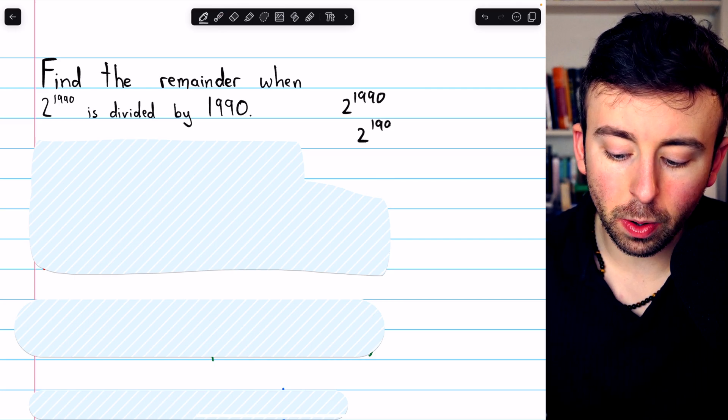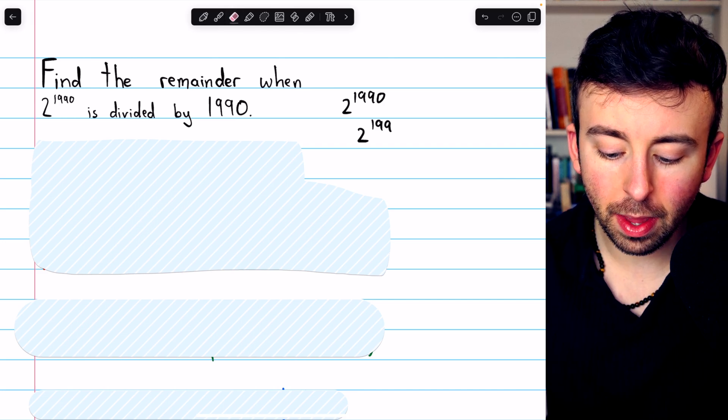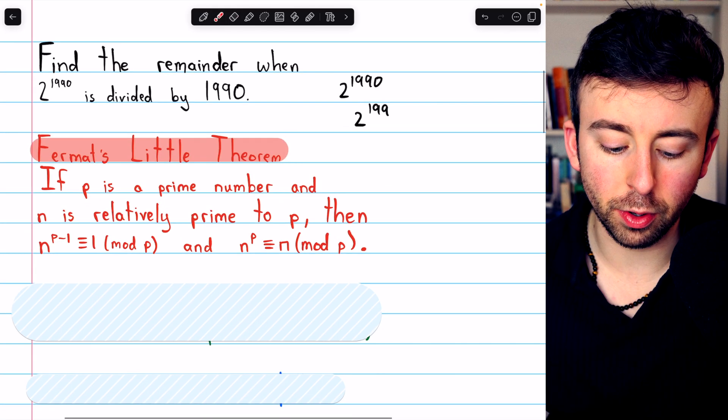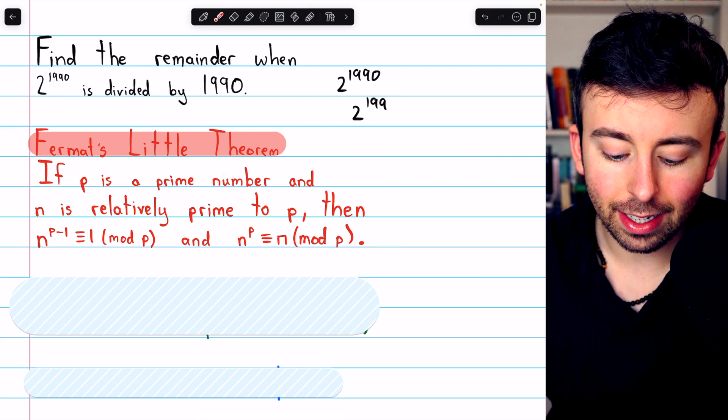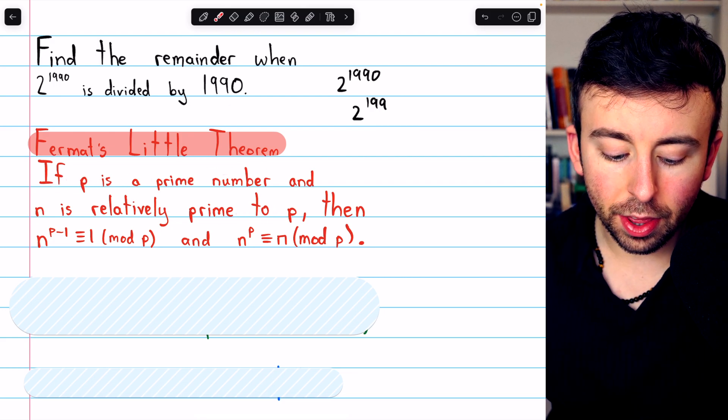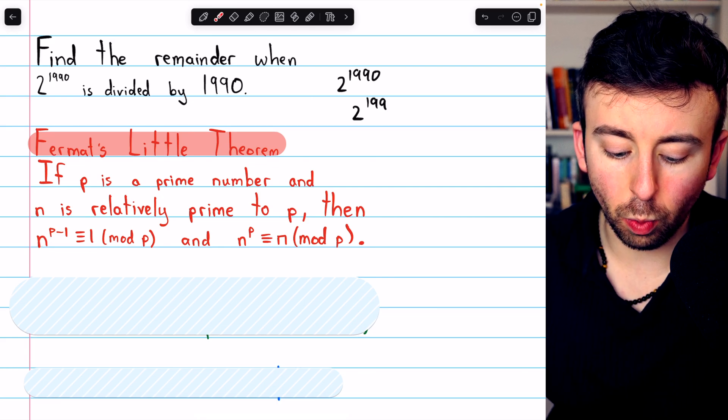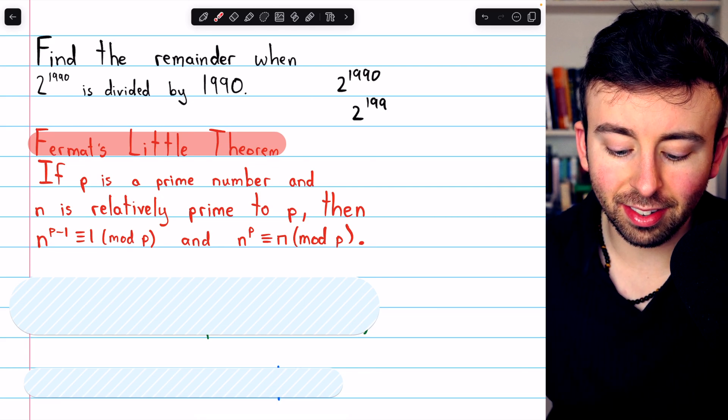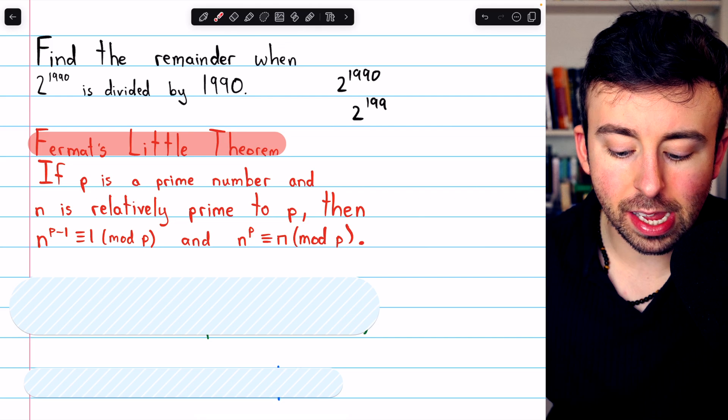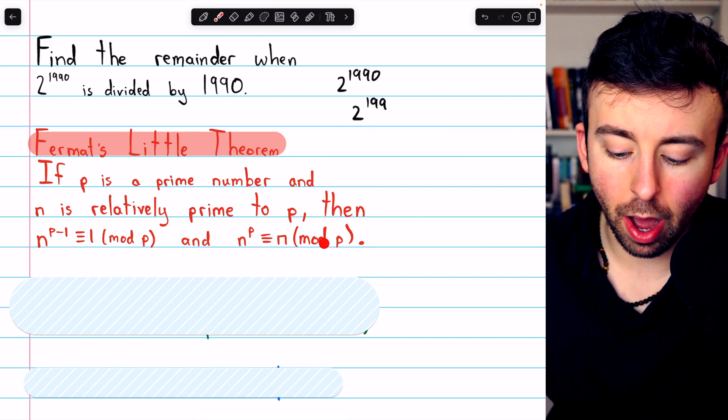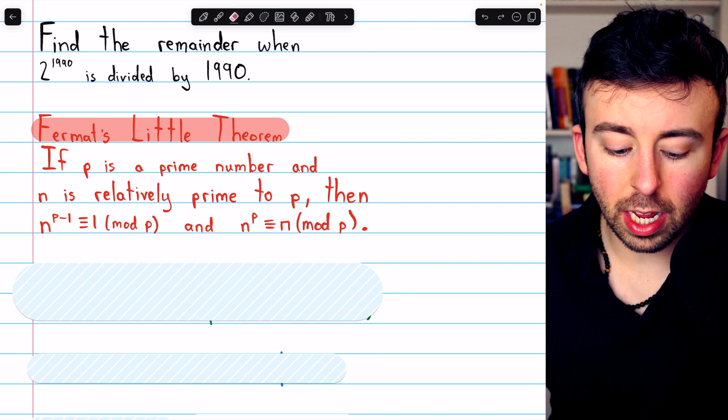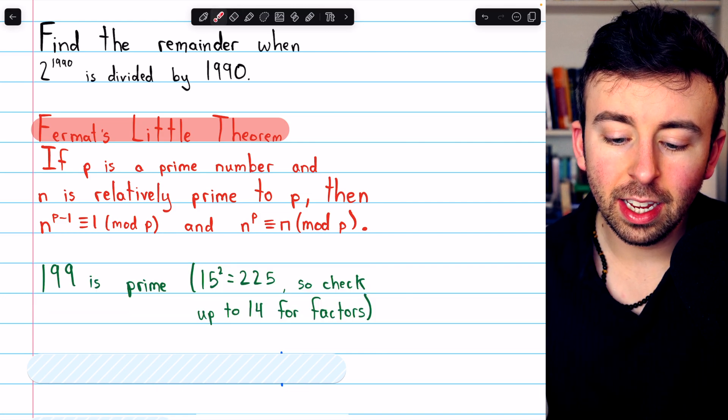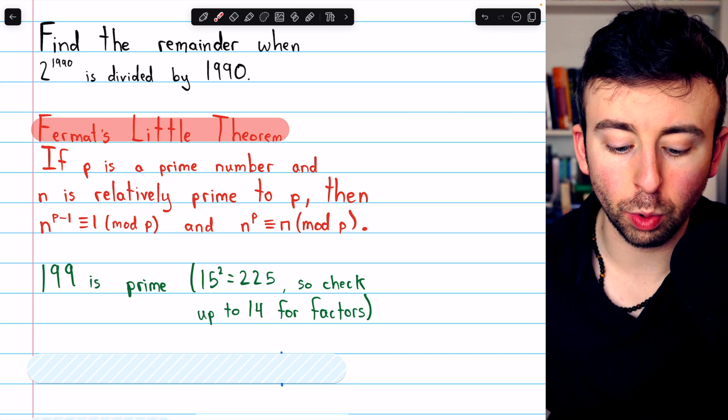So instead of focusing on 2 to the 1990, we're going to start by thinking about 2 to the 199. Here is Fermat's little theorem, if you don't recall. It states that if p is a prime number and n is relatively prime to p, then n to the p minus 1 is congruent to 1 mod p, and that's the same as saying n to the p is congruent to n mod p. This is a must-know theorem for these types of problems. If you don't understand it at a glance, don't worry. You'll see how it works when we apply it.